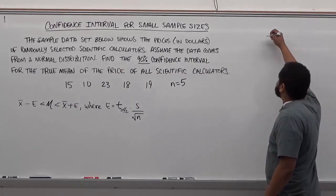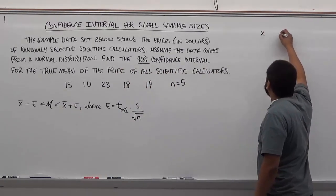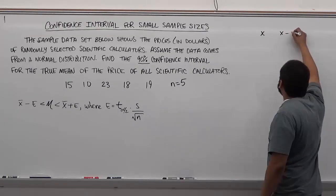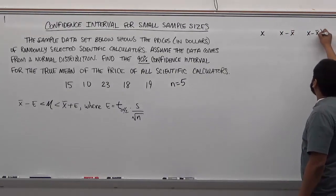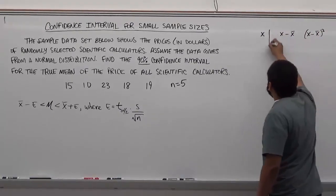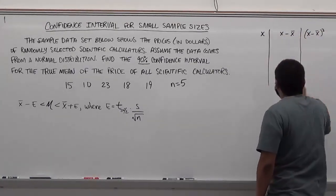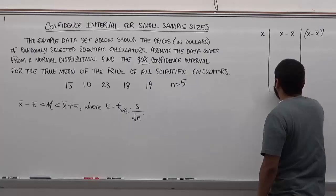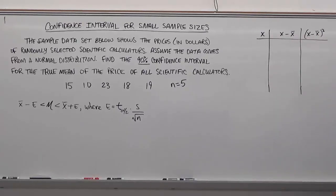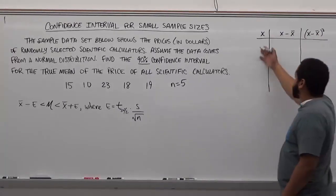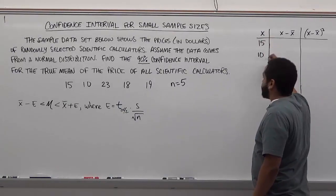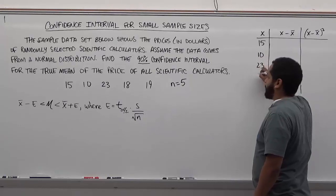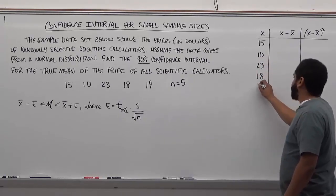So let's begin by making a chart for all the data. We have our x, our sample minus our mean, and our sample minus our mean value squared. And to do this you're going to need a calculator handy. And what we're going to begin to do is first take the list of data and insert them into the chart. So here we have 15, we have 10, we have 23, we have 18 and we have 19.